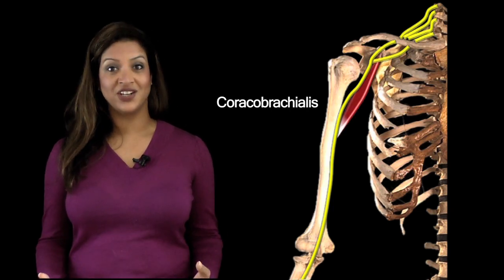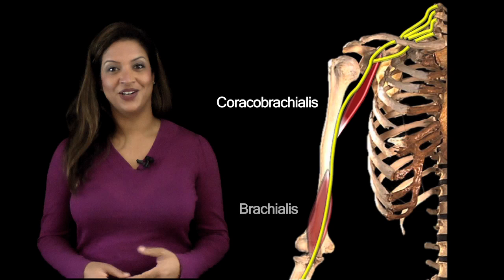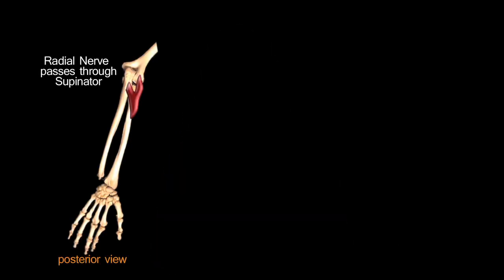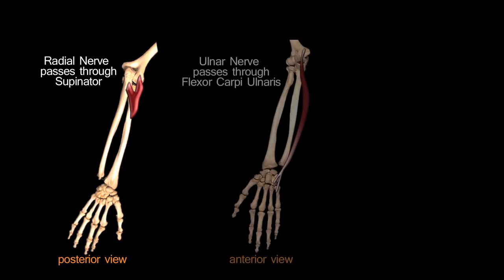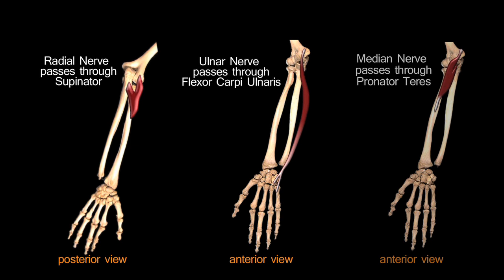On its journey down the arm, the median nerve initially lies on top of the coracobrachialis and then the brachialis muscles. Before entering the forearm, all three nerves that enter the forearm do so by passing between two heads of a muscle. The radial nerve passes through the heads of the supinator, the ulnar nerve passes through the heads of flexor carpi ulnaris, and the median nerve passes through the heads of pronator teres.